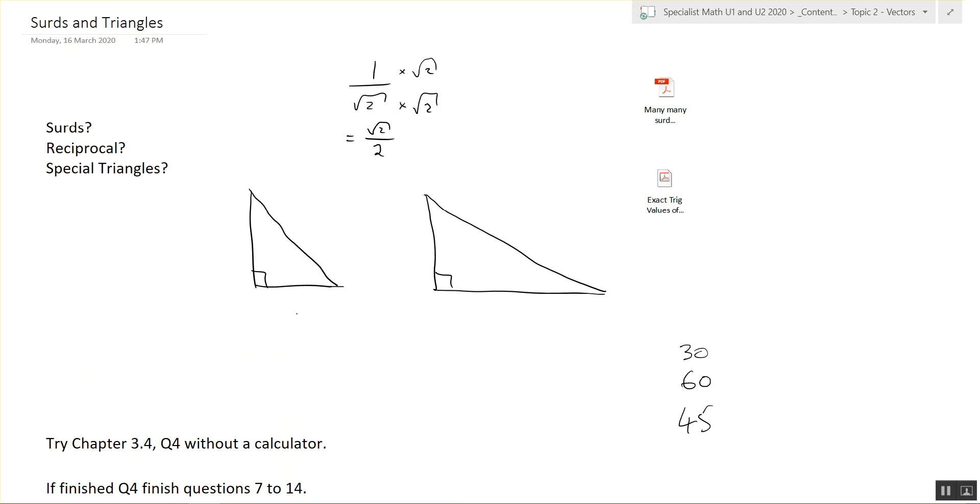In one corner is 30, in the other corner 60, and opposite 30 would be 1, and opposite 60 would be root 3. Yeah, root 3 is the long side, opposite the big angle. Very good. Someone else, the other special triangle.